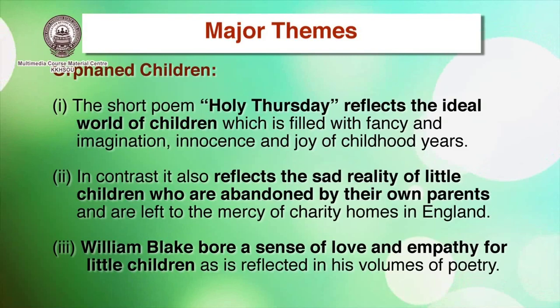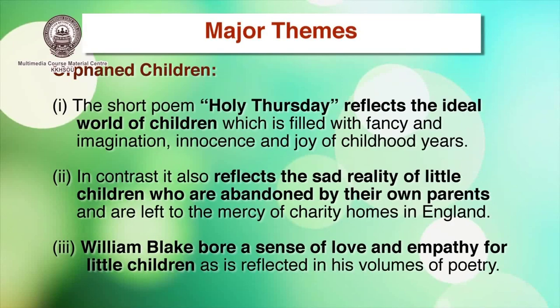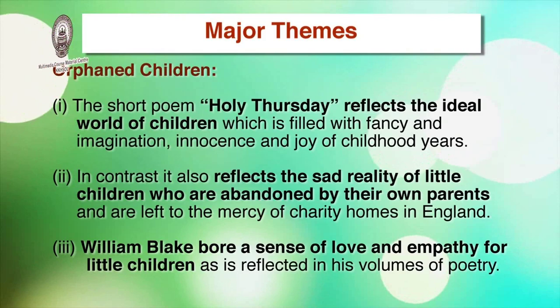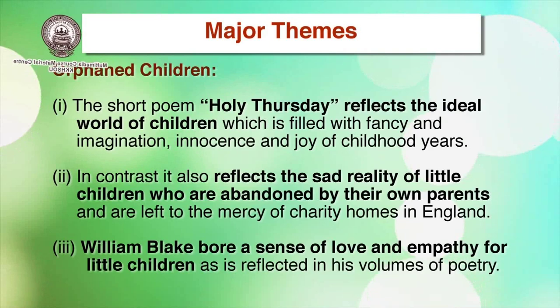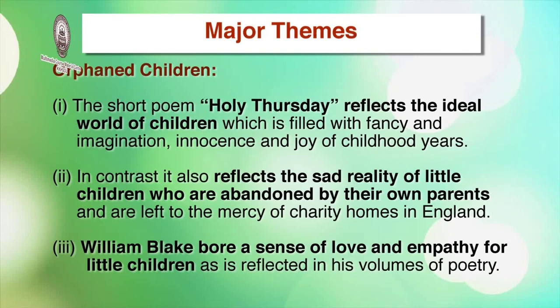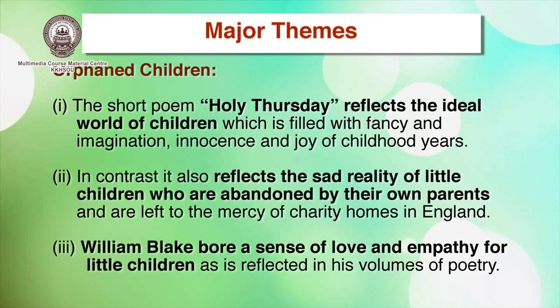Now let us come to the major themes. One major theme is orphaned children. The short poem Holy Thursday reflects the ideal world of children, filled with fancy, imagination, innocence, and joy of childhood years. In contrast, it also reflects the sad reality of little children abandoned by their parents and left to the mercy of charity homes in England. William Blake expressed love and empathy for little children, as reflected in his volumes of poetry.